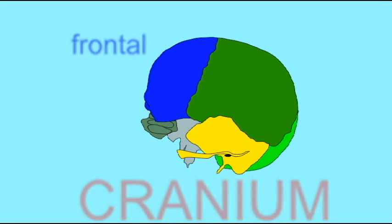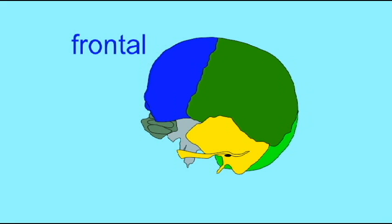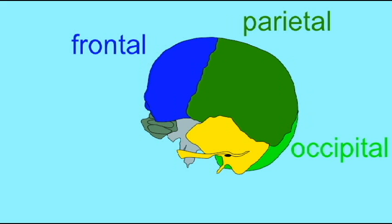Notice how large the frontal and parietal bones are to help enclose the large human brain. Their expansion was very important in human evolution.